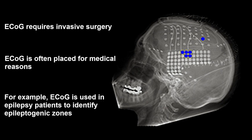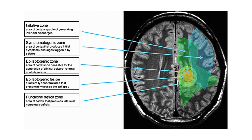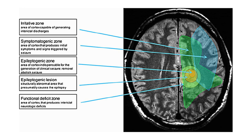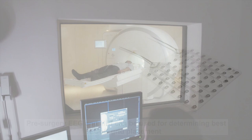For example, ECOG grids can be implanted in epilepsy patients to identify epileptogenic zones, which are parts of their brains that generate seizures. Identifying these zones with ECOG will give surgeons the chance to remove the epileptogenic region without causing too much damage to other areas. Before the initial surgery where the ECOG grids are placed, EEG and MRI scans can help to get a rough estimate of the best location to place the grids.